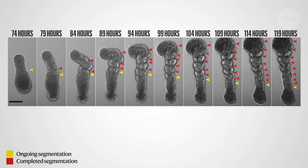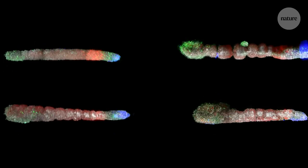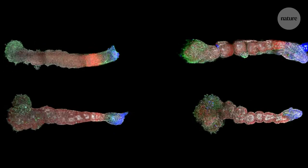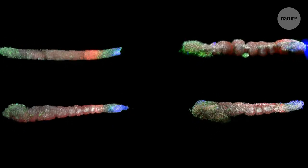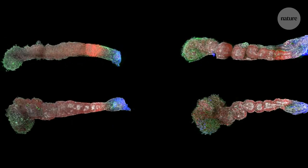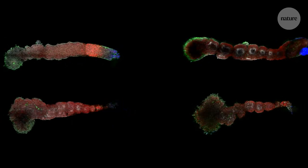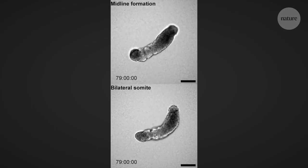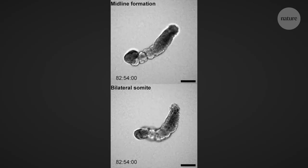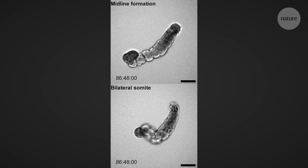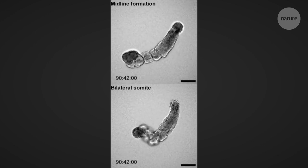In essence, this is the process of somitogenesis, where lumps of tissue start to form in pairs along the length of an embryo. These lumps could then go on to form the spine, as well as lots of other tissues which make up body parts, like muscle, cartilage and tendons.